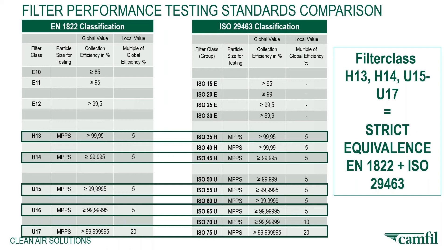The same applies to H14, U16, or whatever classification you want to use. A little rule of thumb: if you're talking about, for instance, an H14 filter, H14 means four nines. So your efficiency at MPPS will be 99.995 — four nines. The equivalent filter in ISO 29463 would be ISO 45H, which has 45 — four nines and a five — so 99.995, just to give you a rule of thumb for figuring out efficiency from filter classes.